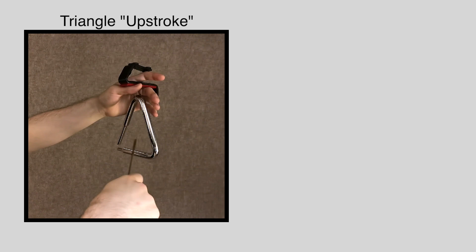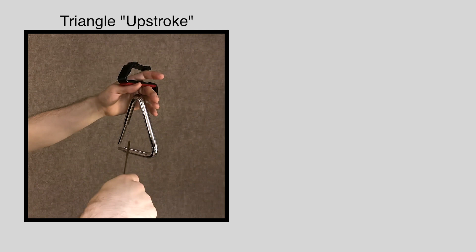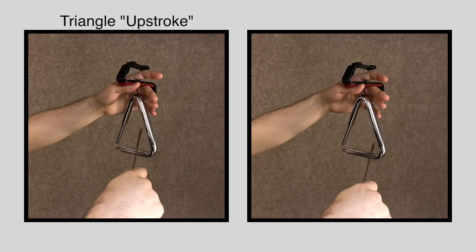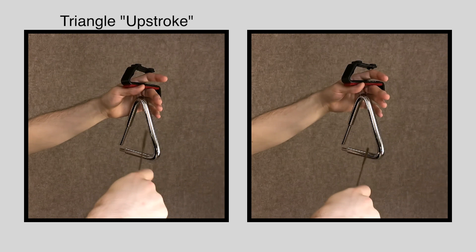To play it this way, we have to do something called a triangle upstroke. And it's unique in that it requires us to hit a surface that is above our striking implement rather than just below it. This motion has to be perfectly even with the downstrokes as we bounce back and forth in the corner of the triangle.